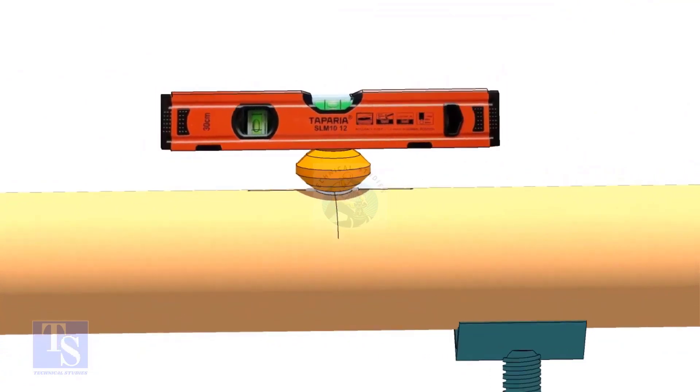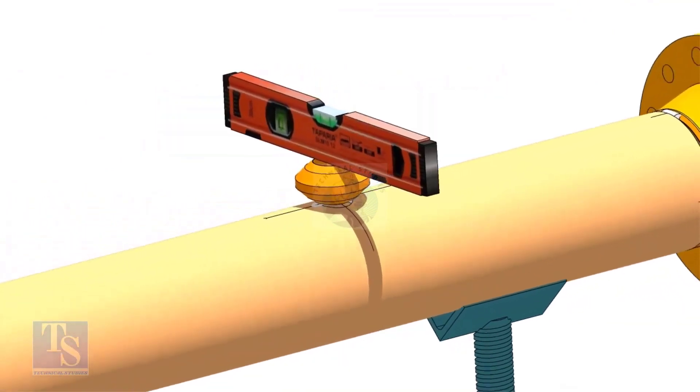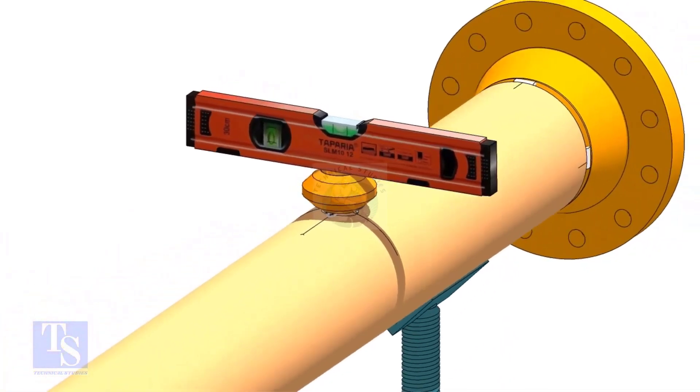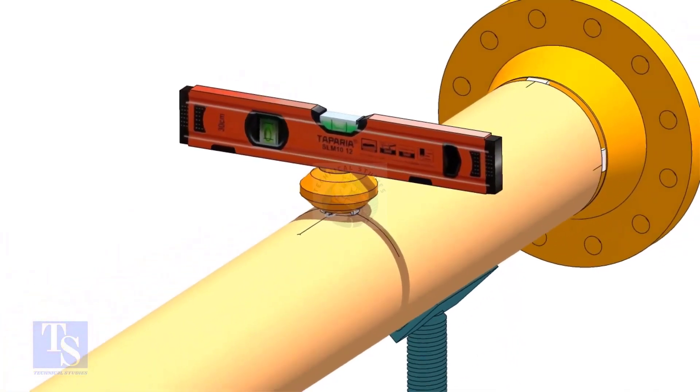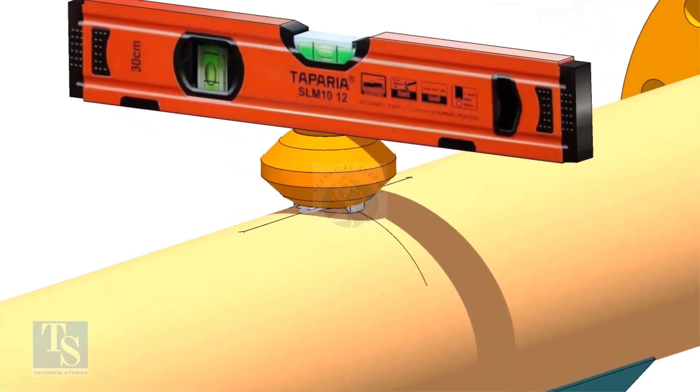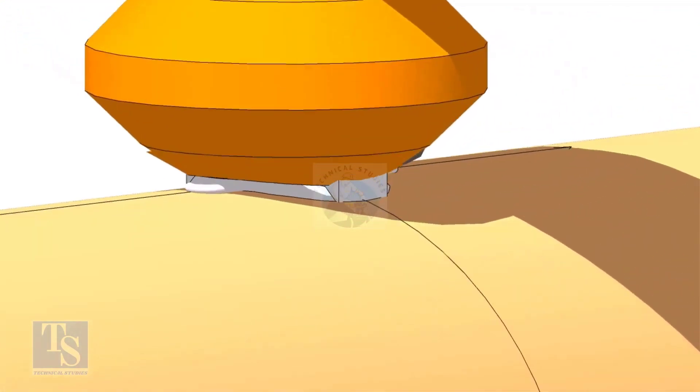Check the level from both sides. Tack weld on the sides of the OLED. Remove the gap rod. Check the level again.